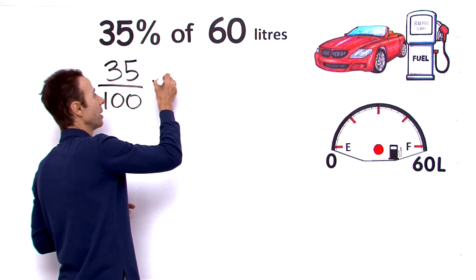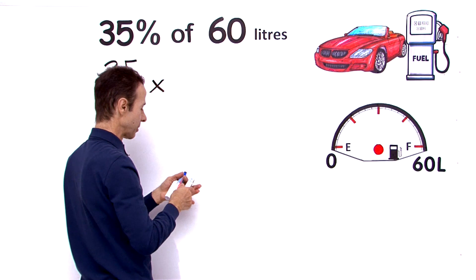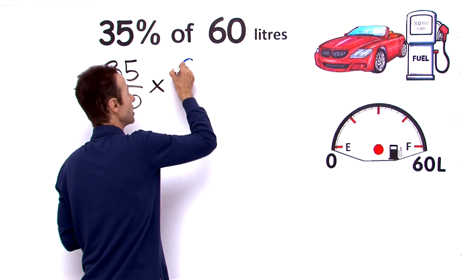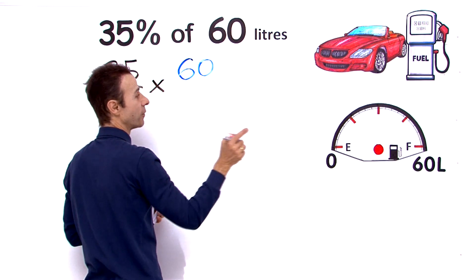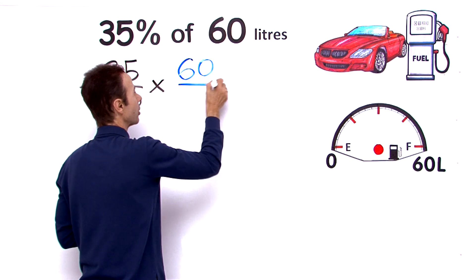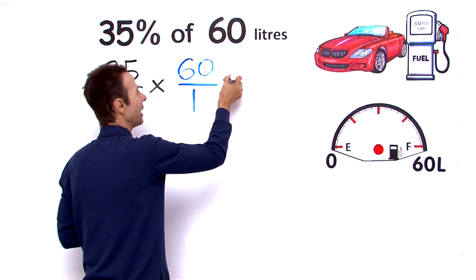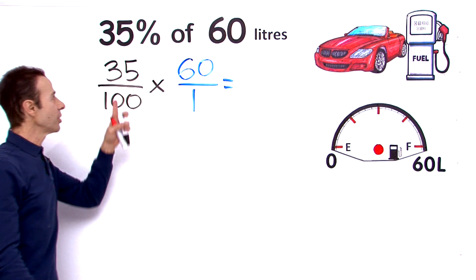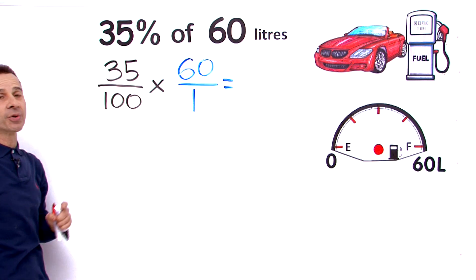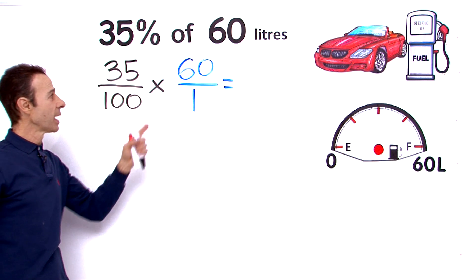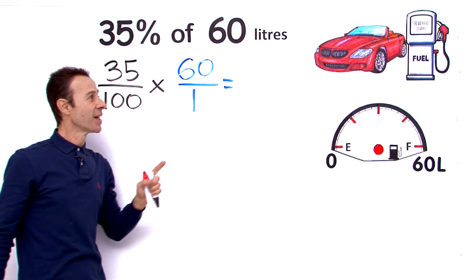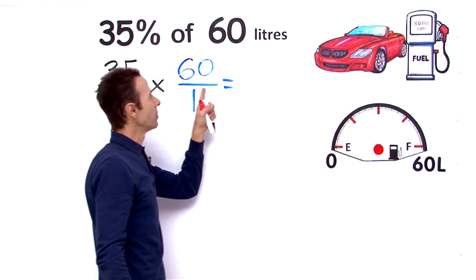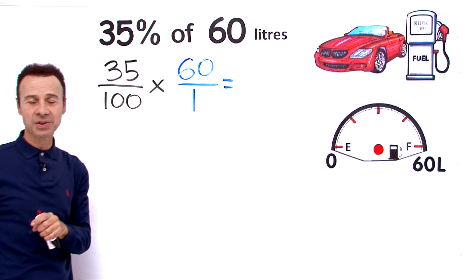So we are going to multiply by 60 litres. Let me just put 60 up here, 60 litres, that is for a full tank of fuel. We're going to put that 60 over a 1 and work this out. So 35 over 100 is equivalent to 35% as a fraction, and we multiply by 60 because it is 60 litres. The answer will be in litres because that is in litre units.